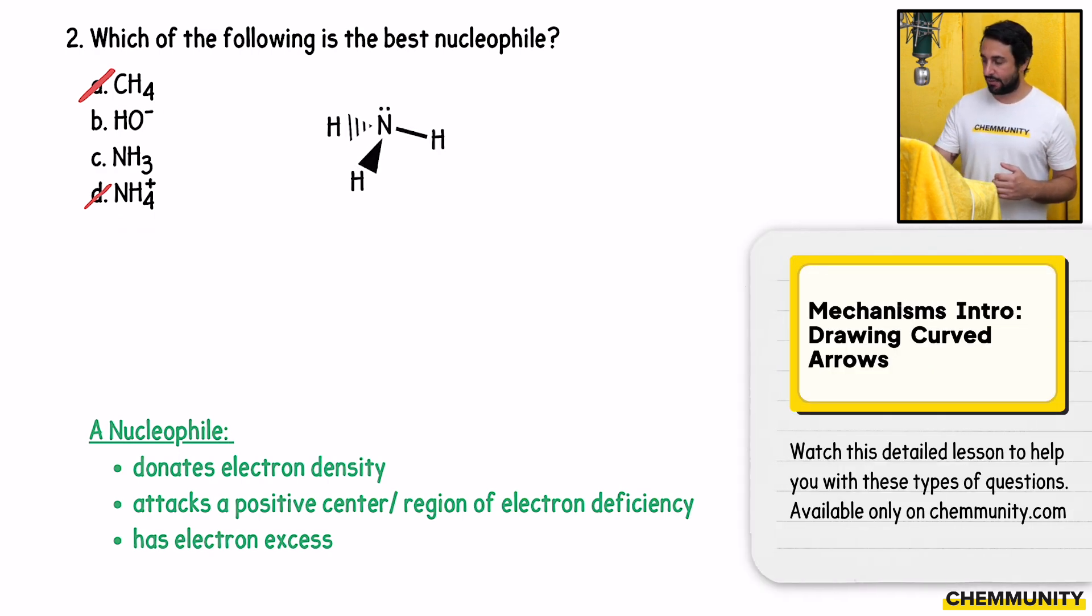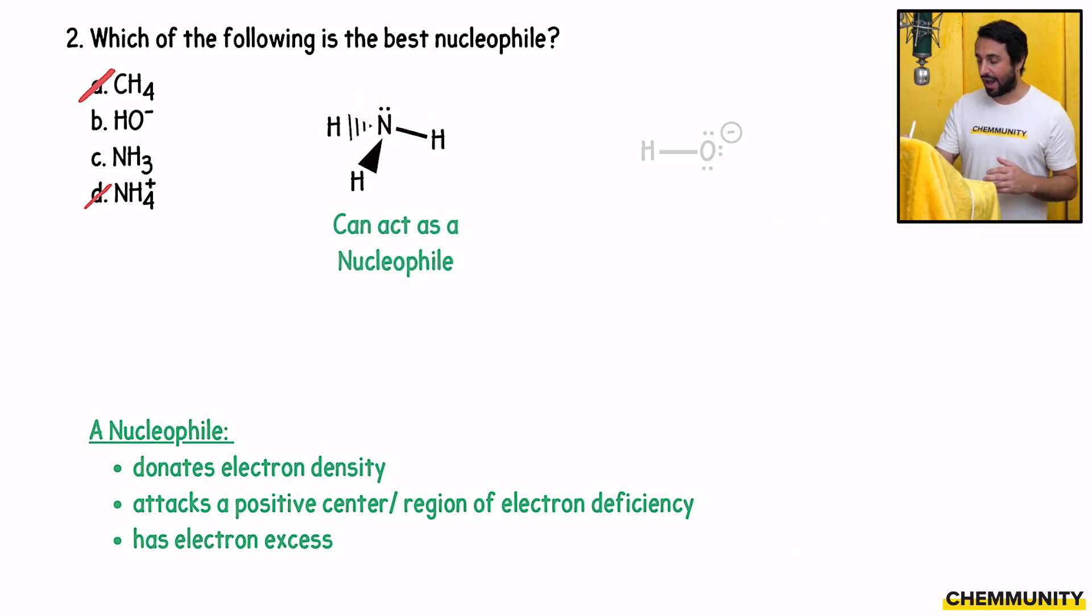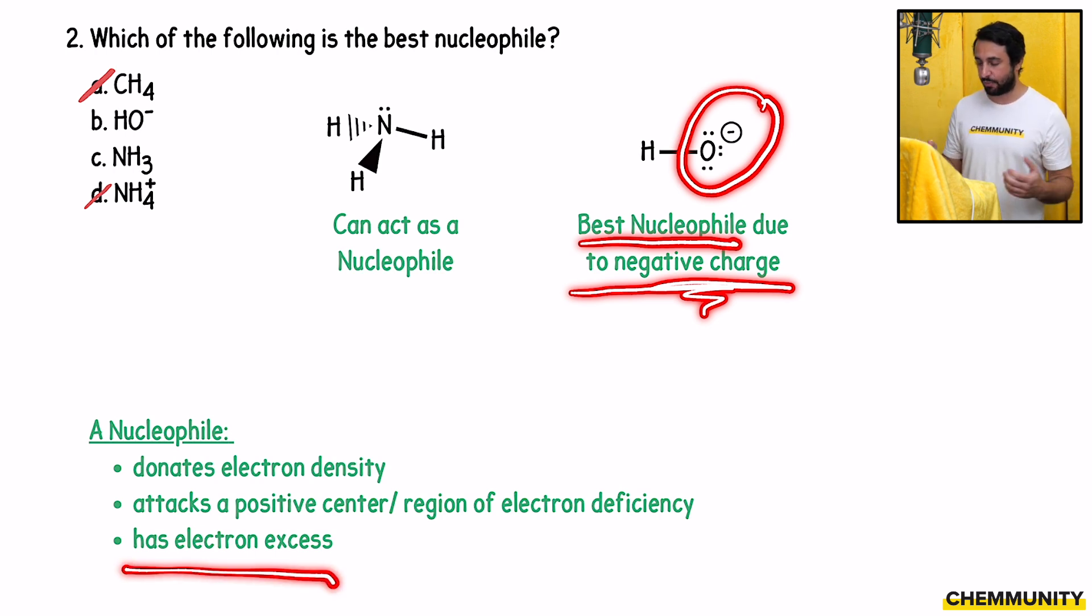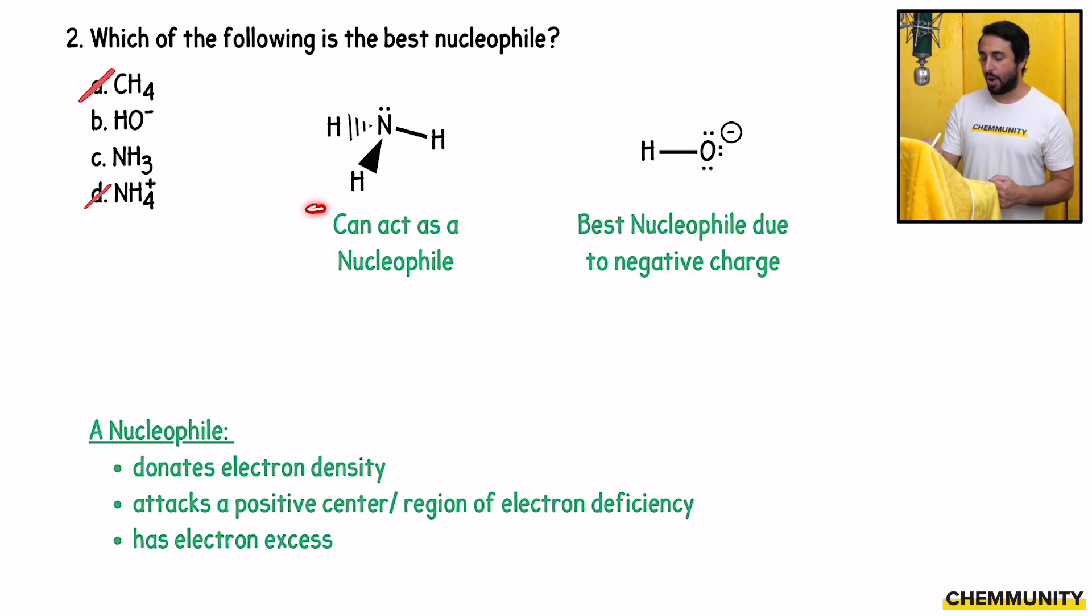NH3 does have a lone pair. And in fact, ammonia can act as a nucleophile. However, hydroxide is going to be a much stronger nucleophile because we have a formal negative charge. This formal negative charge makes this a very good nucleophile. We have a lot of electron excess with that formal negative charge. So ammonia is a good nucleophile in certain contexts, but the hydroxide is going to be an excellent nucleophile. So we're going to go with B, hydroxide.